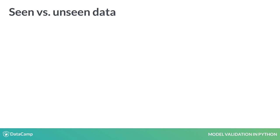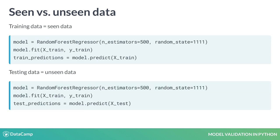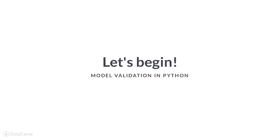Model validation's main goal is to ensure that a predictive model will perform as expected on new data. Obtaining predictions for training data, or seen data, and testing data, or unseen data, is coded in the same way and uses the .predict method. Generally, models perform a lot better on data they have seen before, as unseen data may have features or characteristics that were not exposed in the model. If your training and testing errors are vastly different, it may be a sign that your model is overfitted. We will use model validation to make sure we get the best testing error possible.